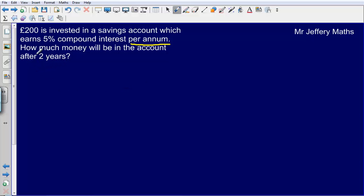The question is asking us how much money will be in the account after two years. Now with compound interest, all that means is that the interest is added at the end of each year.